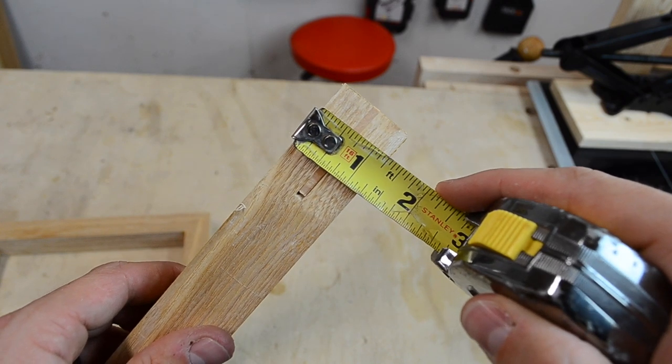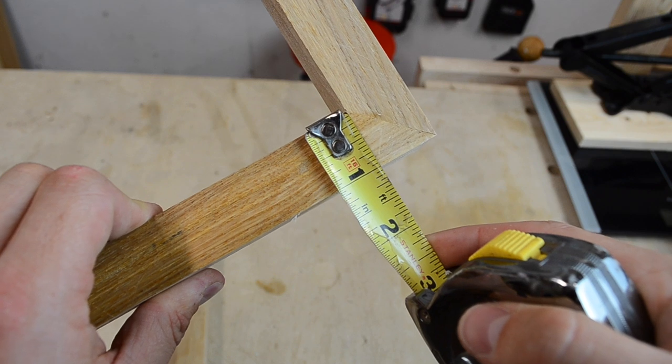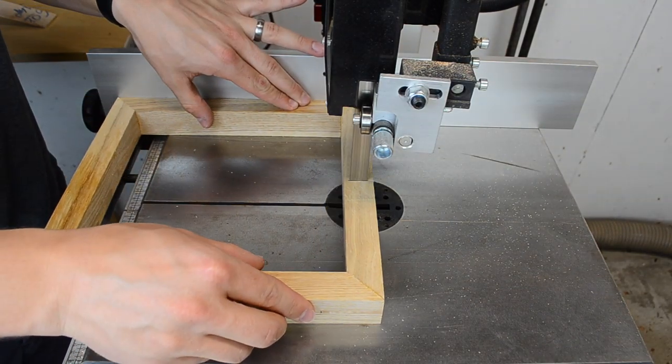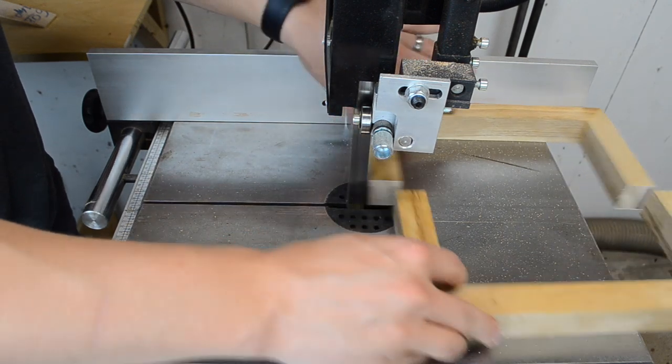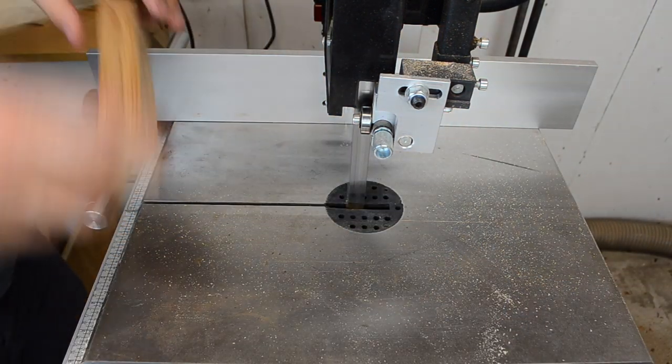For reference, the sides of each frame are 1-1/4 inches by 1 inch. I used my band saw to cut each frame into four pieces. It's a little painful to slice up some perfectly good picture frames, but it's worth it for the sake of science.